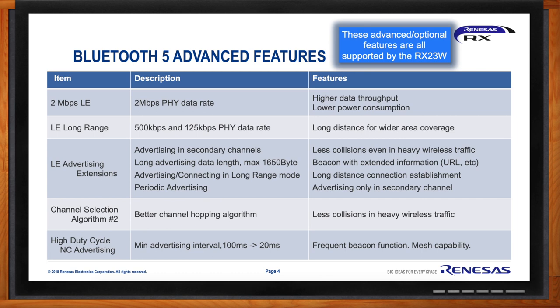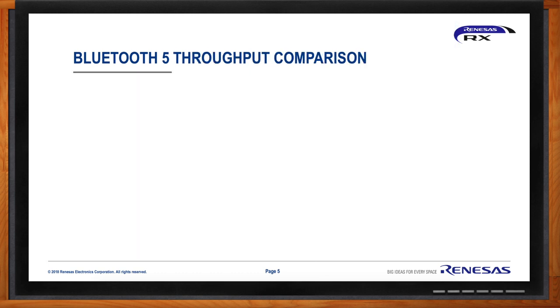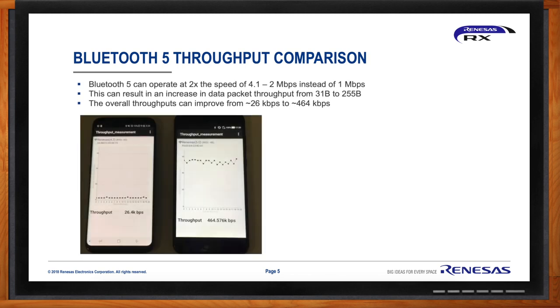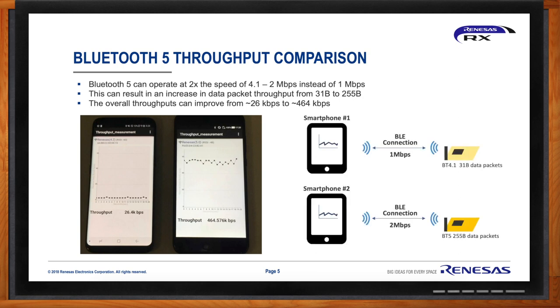Throughput with Bluetooth 5 has gotten even better. The results are dramatic. Comparing with Bluetooth 4.1, the most recent spec before Bluetooth 5, the throughput is over 20 times as much. Throughput in the range of 26 kilobits per second with Bluetooth 4 can jump all the way up to 464 kilobits per second with Bluetooth 5. You're doubling the connection from 1 megabyte per second to 2 megabytes per second, and a 2x increase in connection speed results in more than a 20x increase in throughput performance.